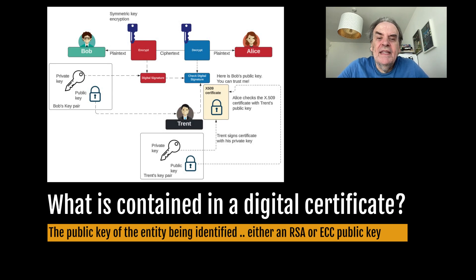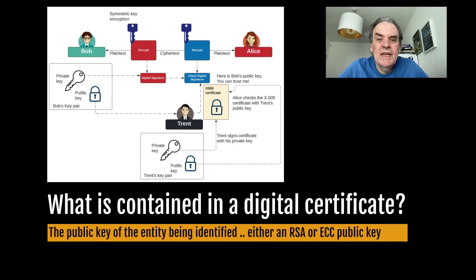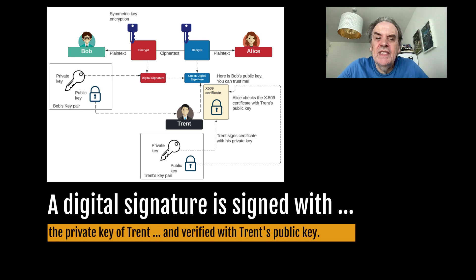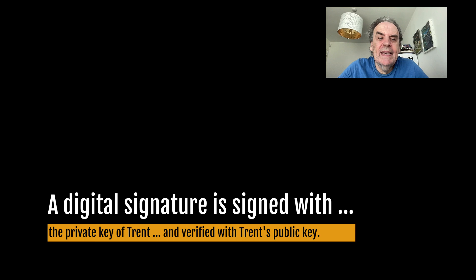The main entity contained in a digital certificate is the public key of a named entity — this is either RSA or elliptic curve. A digital signature is signed with the private key of a trusted entity, Trent. The public key of Trent is then used to prove the integrity and the trust of the associated public key.